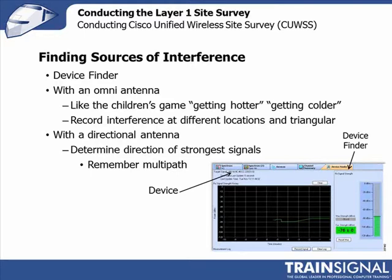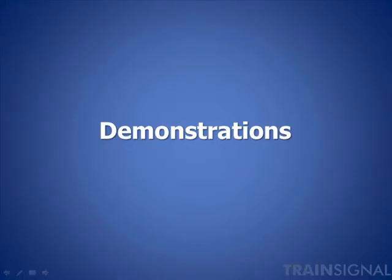I personally prefer using the omni antenna and walking around, for two reasons: one, I like to get exercise, but also with the directional antenna you have to remember that signals suffer multipath — a signal might be bouncing off a wall, a cubicle, or someone's body. You could be heading the wrong direction and need to take another measurement and do another sweep. I typically only use the directional antenna in a very open environment when I need to find a source quickly; otherwise I stay with the omni antenna that ships with the Cisco Spectrum Expert.